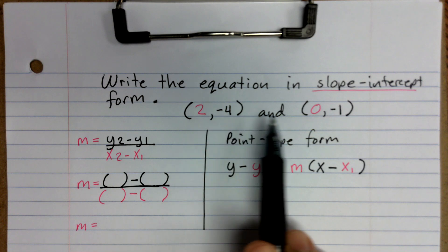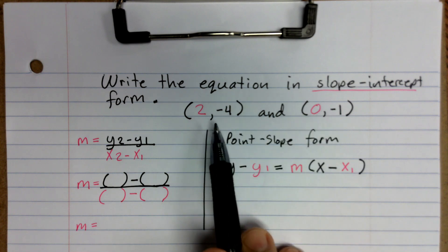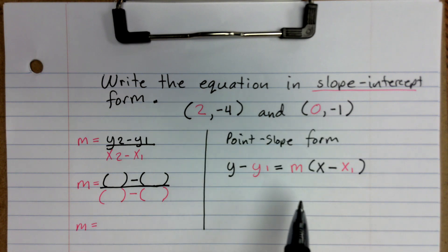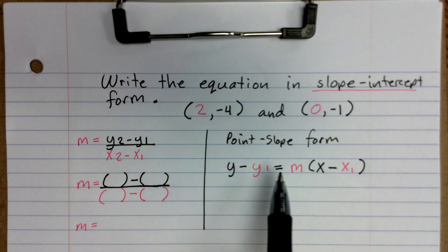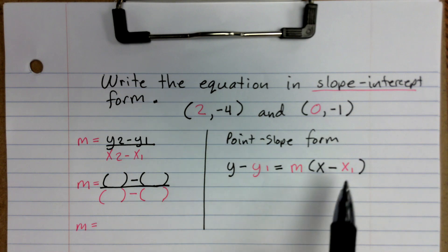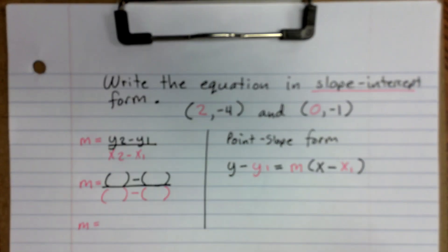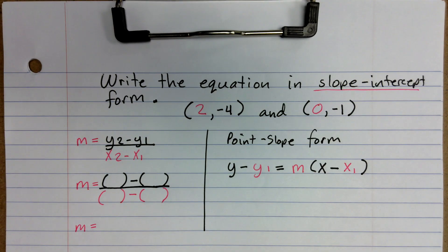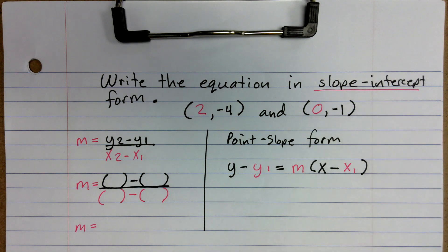We're going to pick one of these ordered pairs — it doesn't matter which one — and substitute the y value for y1 and the x value for x1. Before we actually do this, I want to talk about what slope-intercept form is.